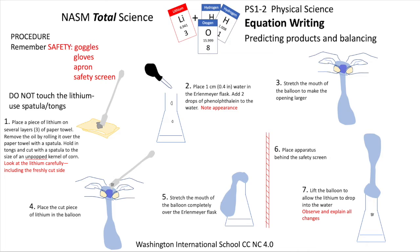Add water to a centimeter depth in the bottom of a 100 milliliter Erlenmeyer flask. Add two drops of your indicator. Note the appearance of each of the chemicals. Stretch the mouth of a balloon and place the cut piece carefully into the balloon.